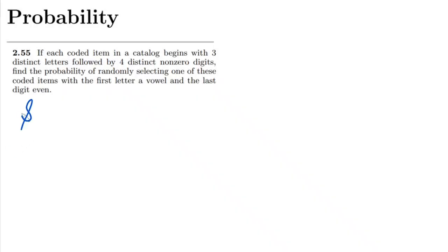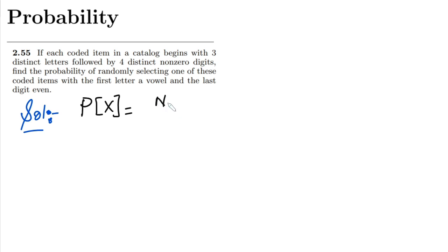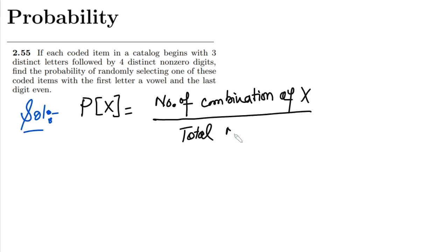So in these types of questions, what will be the strategy? If I want to find the probability of X, I have to find the number of combinations of X divided by the total number of combinations or permutations.